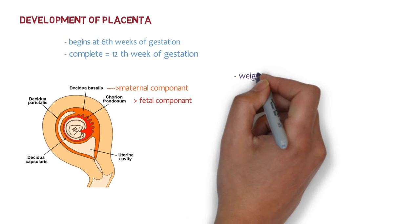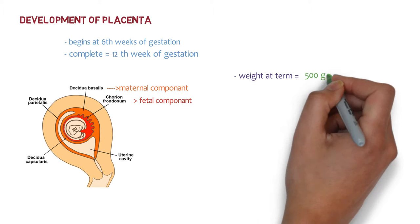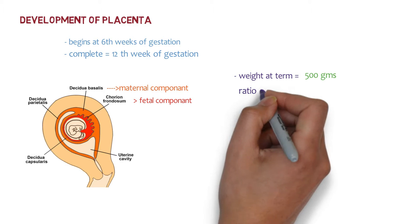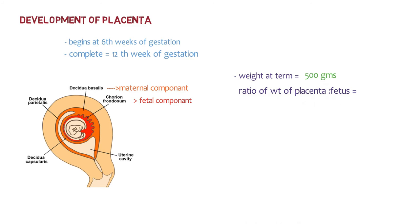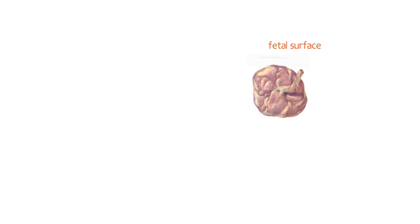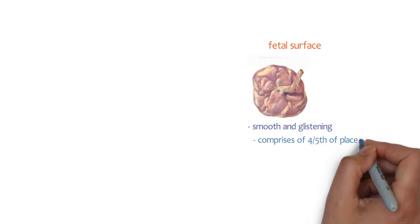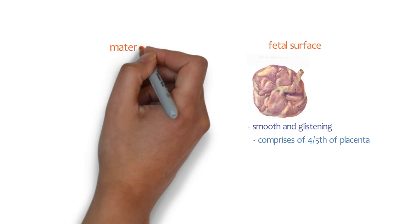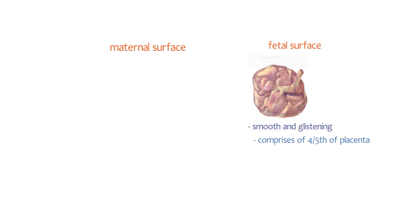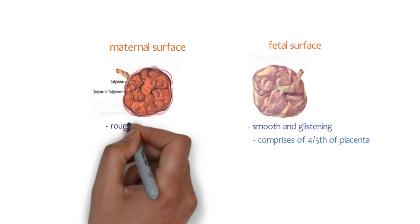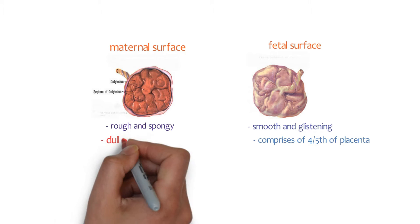Grossly, the placenta at term weighs about 500 grams, the proportion to the weight of the baby being roughly 1:6. It has two surfaces — fetal and maternal. The fetal surface is smooth and glistening due to amnion. At term, about four-fifths of the placenta is of fetal origin. The maternal surface, on the other hand, is rough and spongy, and maternal blood gives it a dull red colour.